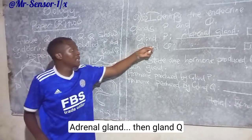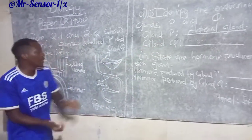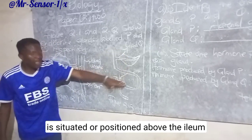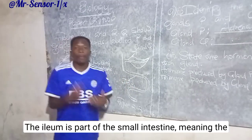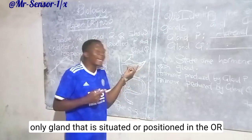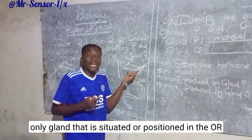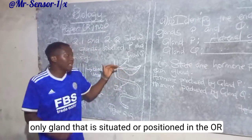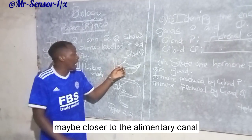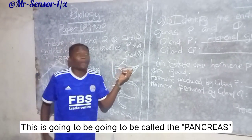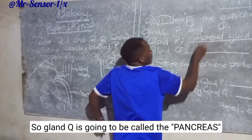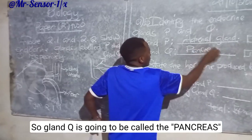Then gland Q. Gland Q is positioned above the ilium. The ilium is part of the small intestine, meaning the only gland positioned closer to the alimentary canal is the pancreas. So gland Q is going to be called the pancreas.